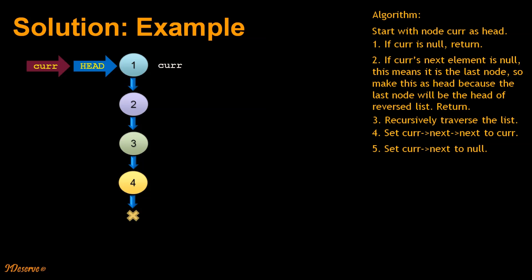The first step is if current is null, then return. Current is not null, we move to the second step. If current.next element is null, it is not null. So we recursively call for the next element.